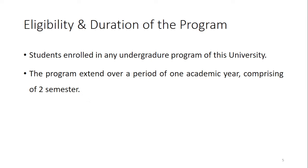As per eligibility and duration of the program, any student enrolled in any undergraduate program of this university is eligible for the course. You have to select this course in semester 3, and the program extends over a period of one academic year — that is 2 semesters, semester 3 and semester 4. Across the university, any student of semester 3 can opt for this course.